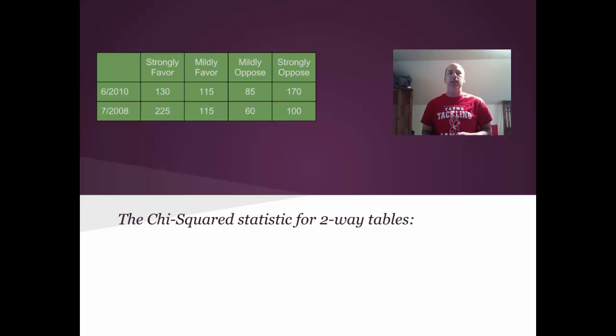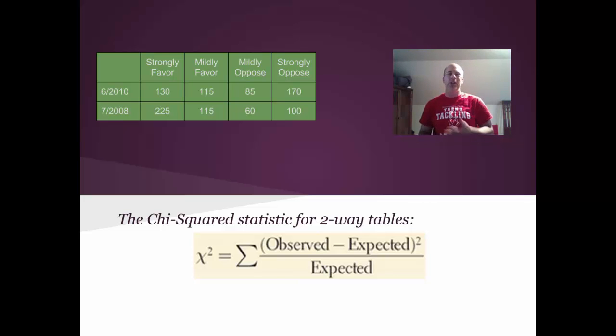Let's dive right into the chi-squared statistic for two-way tables. What's neat here is that the chi-squared statistic is computed the same exact way it was computed in a chi-squared goodness of fit test. We'll take observed values, subtract them from expected values, square that, and divide by the expected. So the computations will be very similar to the goodness of fit test.